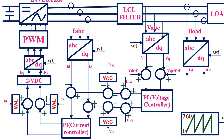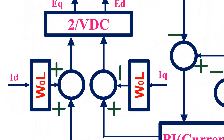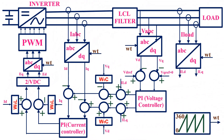The current controller is also modified and the value of the filter inductor is now included in the controller. In the omega-zero-L term, omega-zero is the grid frequency and L is the total inductance value. Everything else remains the same, and now we can go to the simulation.